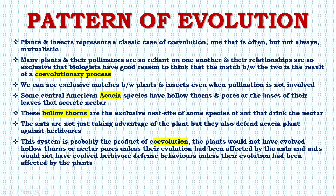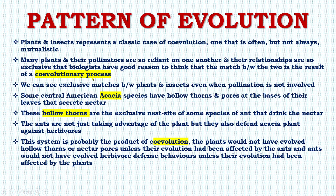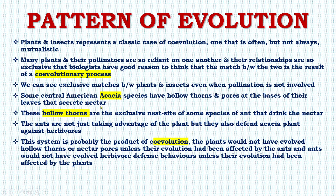Plants and insects represent a classic case of co-evolution, one that is often but not always mutualistic. Many plants and their pollinators are so reliant on one another that their relationships are exclusive, giving biologists good reason to think the match is the result of a co-evolutionary process. We can see exclusive matches between plants and insects even when pollination is not involved. Some Central American acacia species have hollow thorns and pores at the bases of their leaves that secrete nectar. These hollow thorns are the exclusive nest site of some species of ant that drink the nectar.